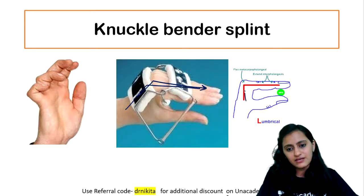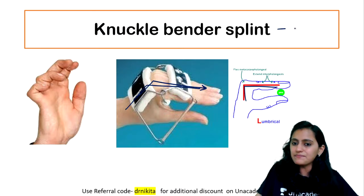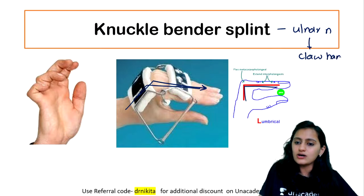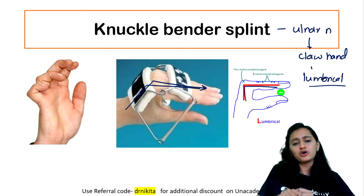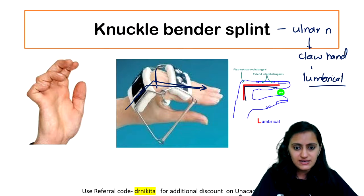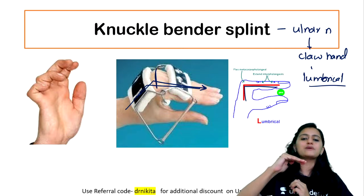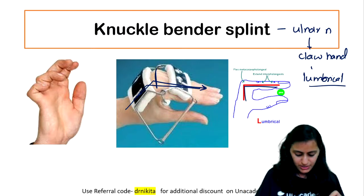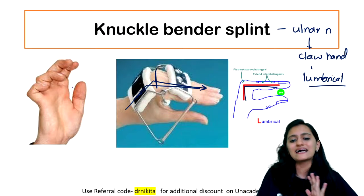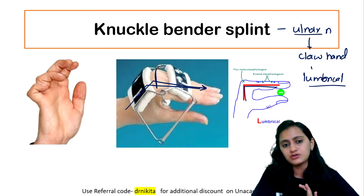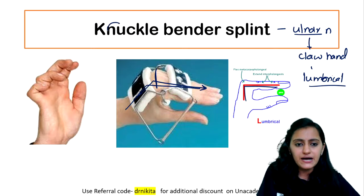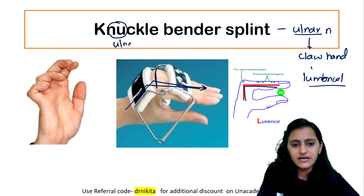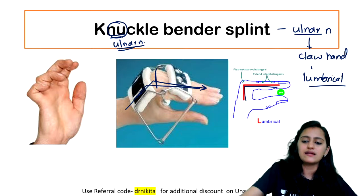The knuckle bender splint has an L-shaped form like the lumbrical action. Knuckle bender splint is used for ulnar nerve palsy which causes claw hand, which is due to lumbrical muscles getting affected. So you will bend the knuckles. The term also helps you remember: knuckle bender is used in ulnar nerve palsy.